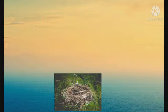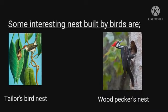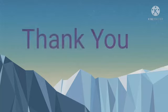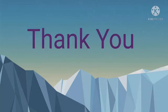Now we are going to discuss some birds' nests. As we can see in the picture, the first nest is a tailor bird's nest — the little bird stitches together leaves to make its nest. The next one is a woodpecker's nest; it often finds a small hole in a tree trunk and enlarges it by pecking with its beak. I hope students have understood this chapter. Thank you and do take very good care of yourself.